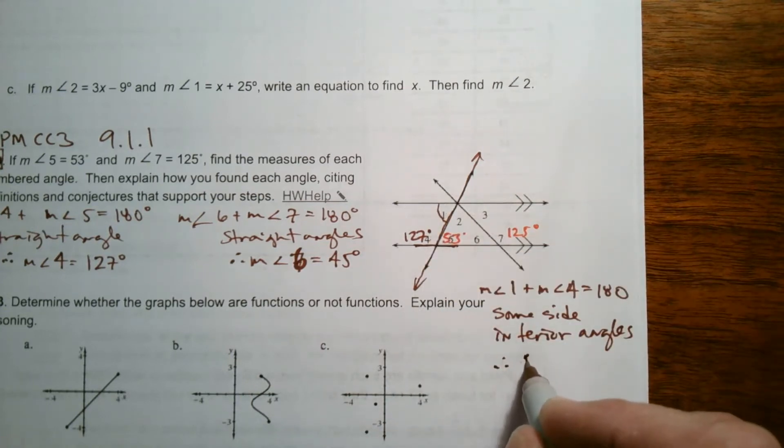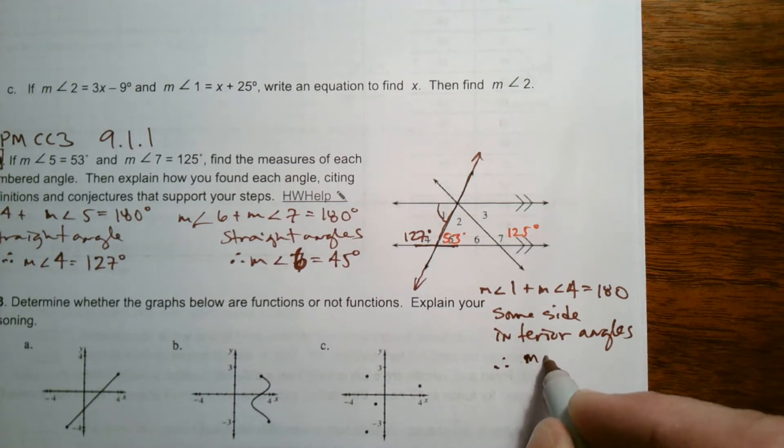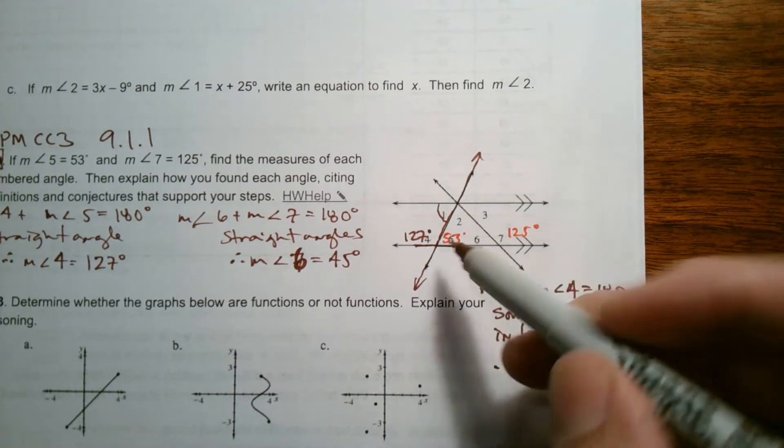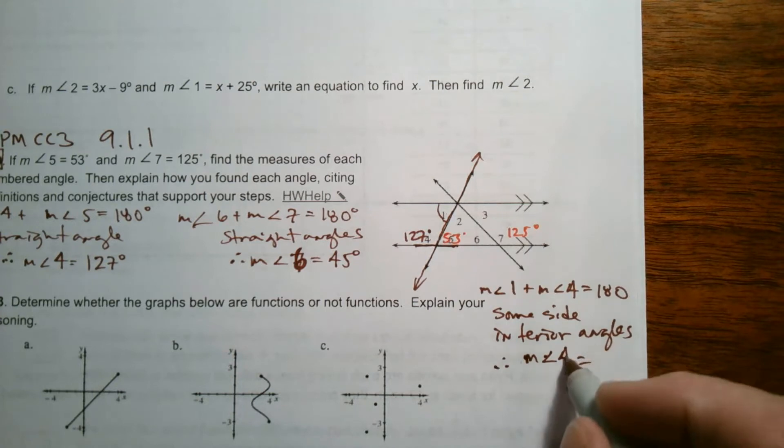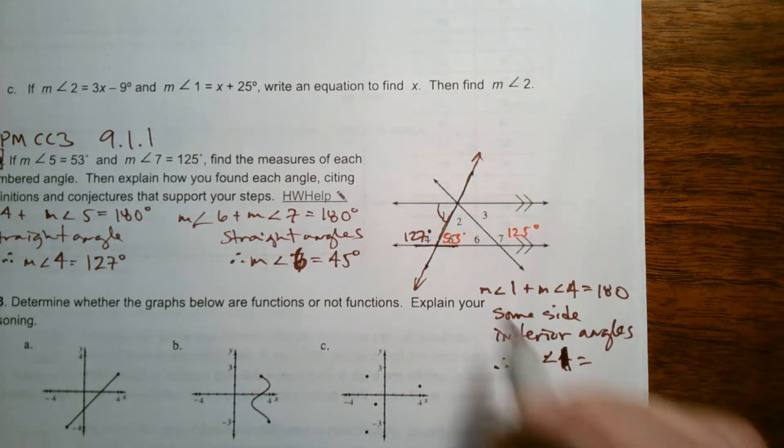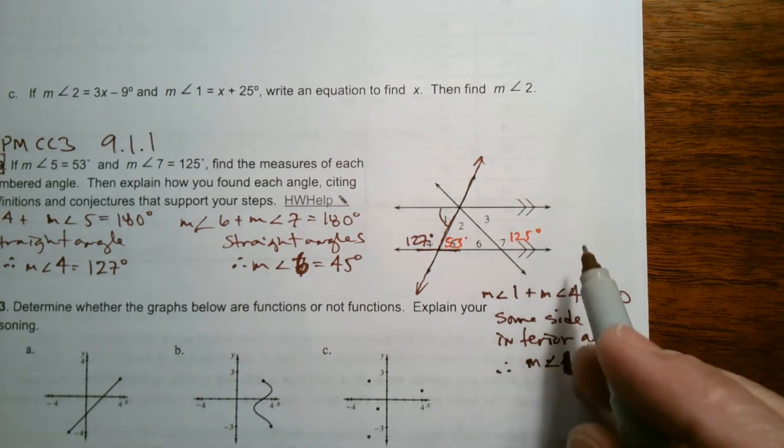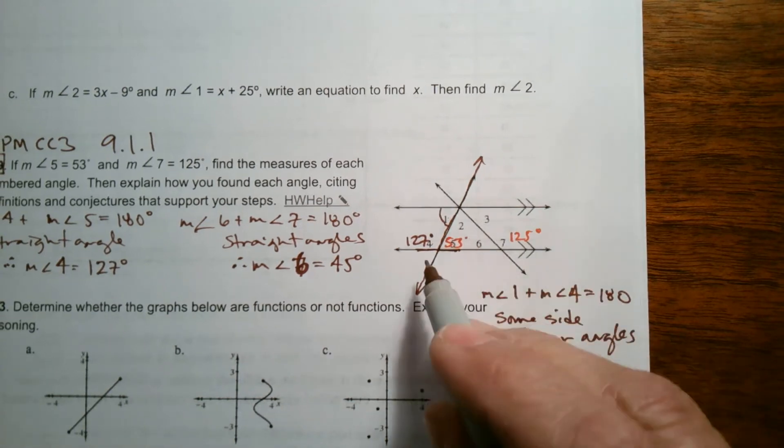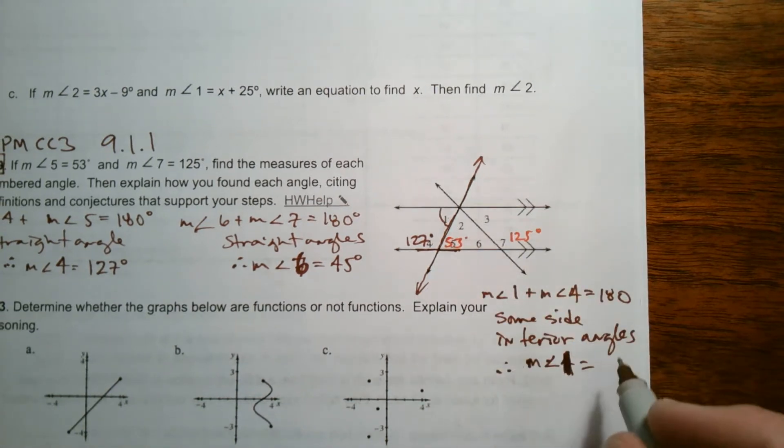Because there's that transversal, that plus that equals 180. Therefore, we can also then, at this point, come up with the measure of angle 1. 4 is 127, so angle 1, measure of angle 1 would be 180 minus 127, which would be 53 degrees.